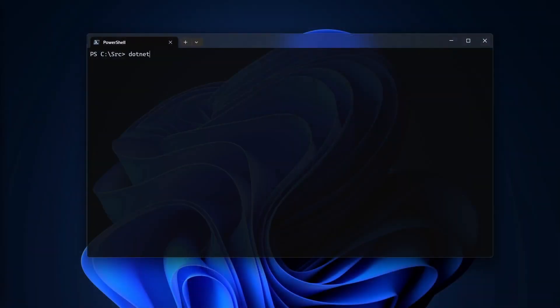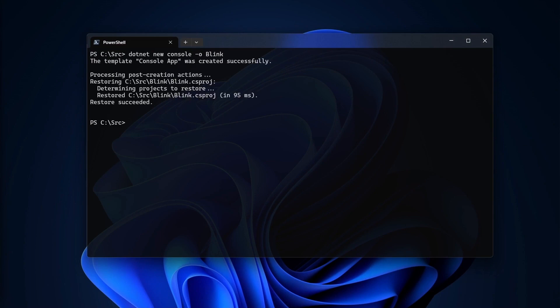Now I can create a new .NET console app using the .NET 7 SDK. I'll name it Blink, then I'll set my location to the new directory and open it in VS Code.